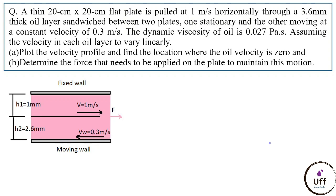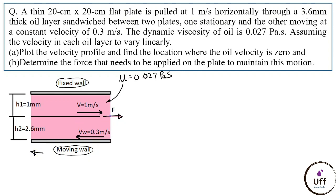A diagram is provided: the top plate is a fixed wall, the bottom one is a moving wall, and in between these two walls there is fluid with viscosity 0.027 pascal seconds. The middle plate moves at 1 meter per second. The distance from the fixed wall to the middle plate is 1 mm, and from the moving wall to the middle plate is 2.6 mm. The bottom plate moves at 0.3 meter per second and the middle plate moves to the right at 1 meter per second.